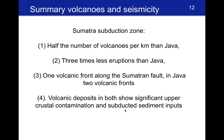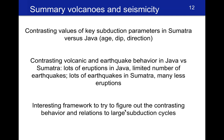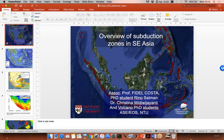In summary: Sumatra has fewer volcanoes per unit area than Java and they are much less active. There are two volcanic fronts in Java but only one in Sumatra. Both show similar inputs from subducting sediments and upper plate material. The difference in earthquakes and volcanoes between Java and Sumatra seems related to changes in slab age, slab dip, and direction of subduction — a nice natural laboratory to test these ideas and understand potential earthquake and volcanic cycles.